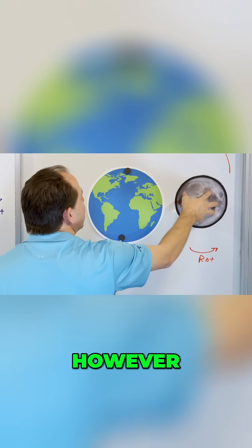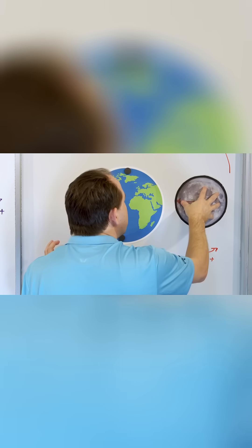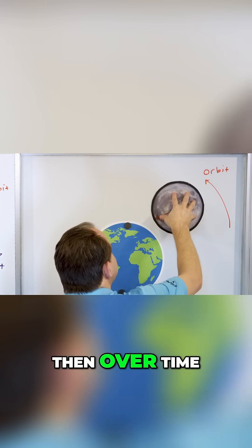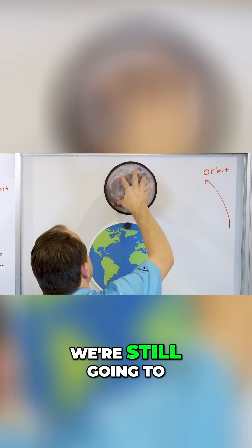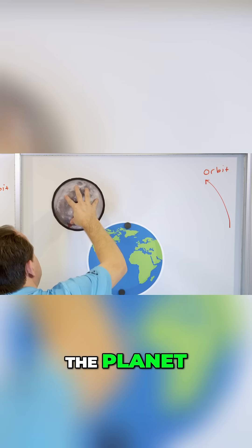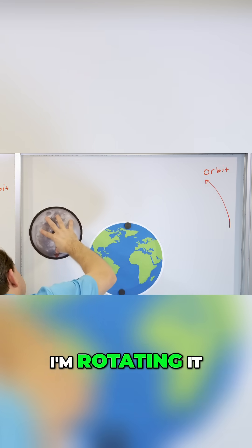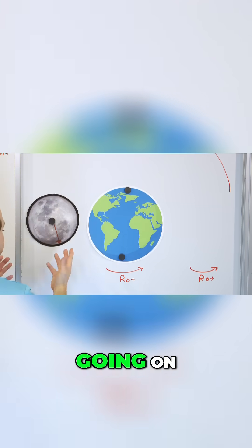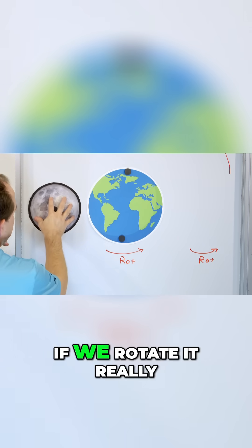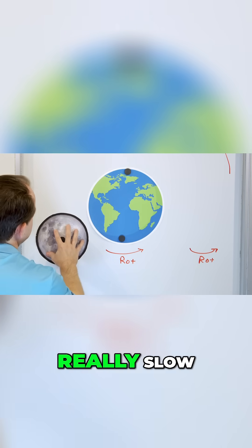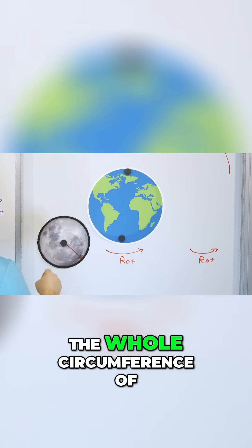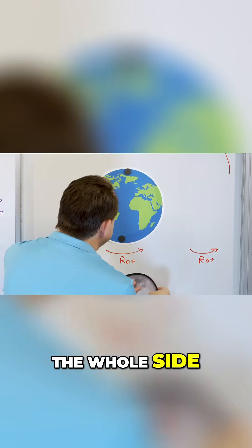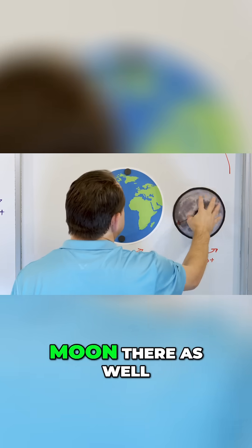If the Moon, however, rotates very slow — then over time we're still going to see all sides of the Moon. I'm rotating it, but very, very slow. So you see what's going on: if we rotate it really, really slow, eventually you can see the whole circumference, both faces, both sides of the Moon as well.